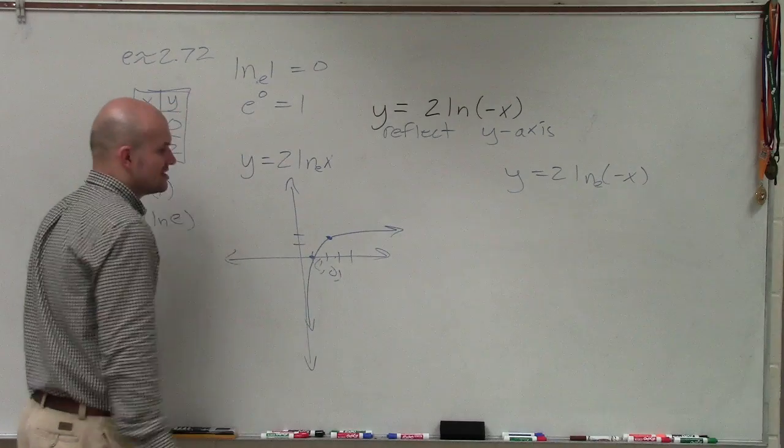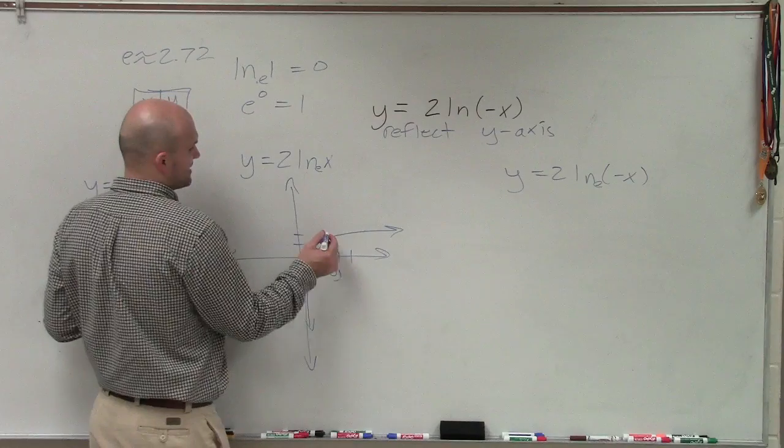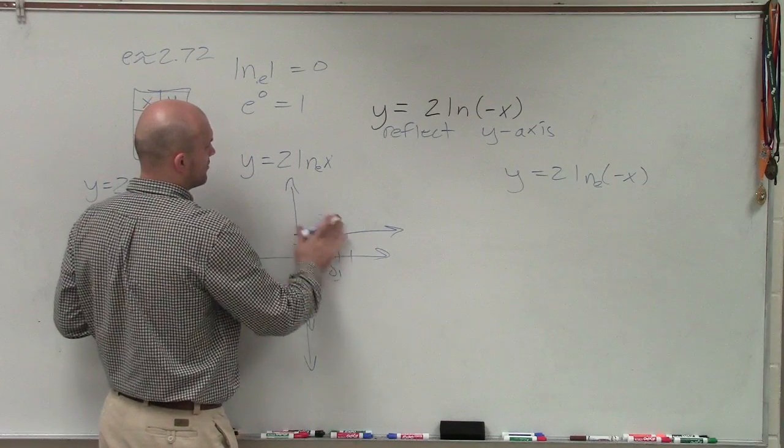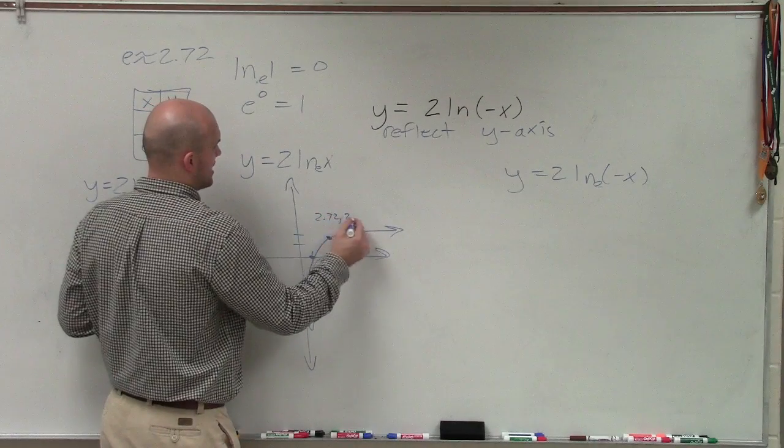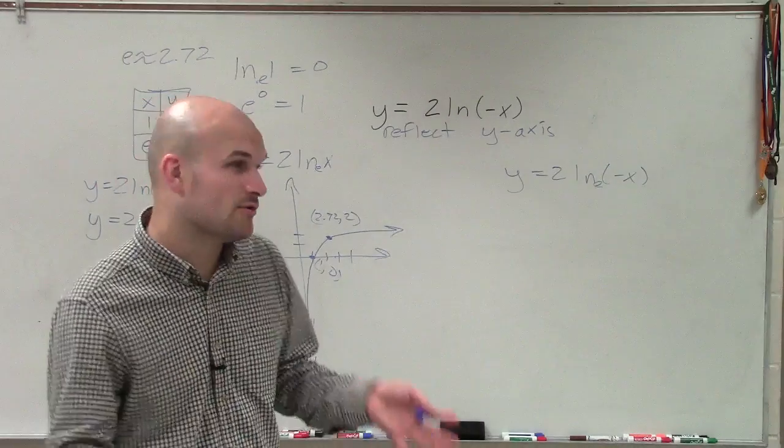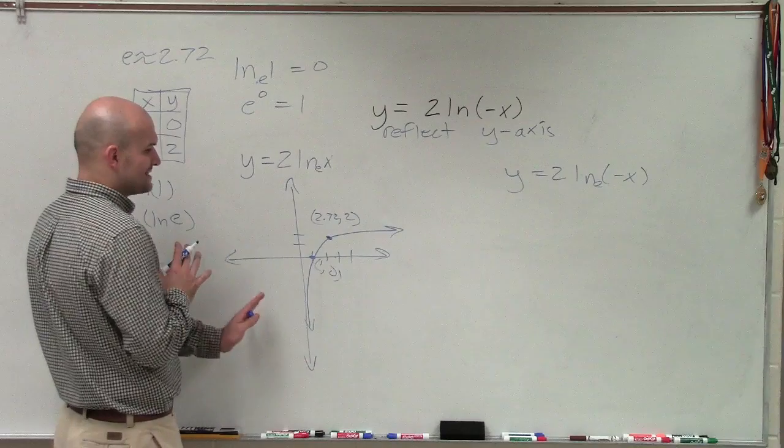So my graph is going to look something like that. Pretty rough estimate here because, again, I'm approximating this point, which is e comma 2. Or what I'll do is 2.72 approximate comma 2. Alright? So that's now what my paragraph is. And now what I need to do is reflect this about the y-axis.